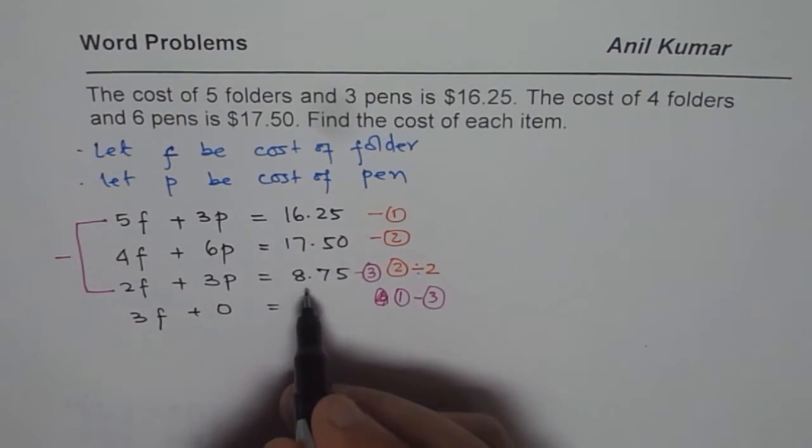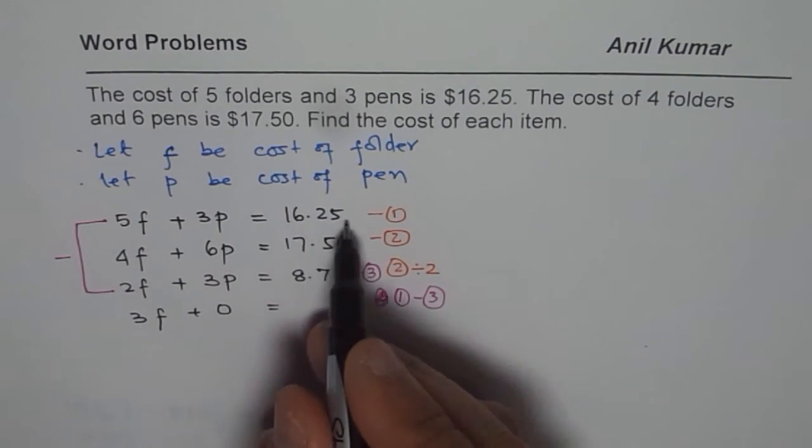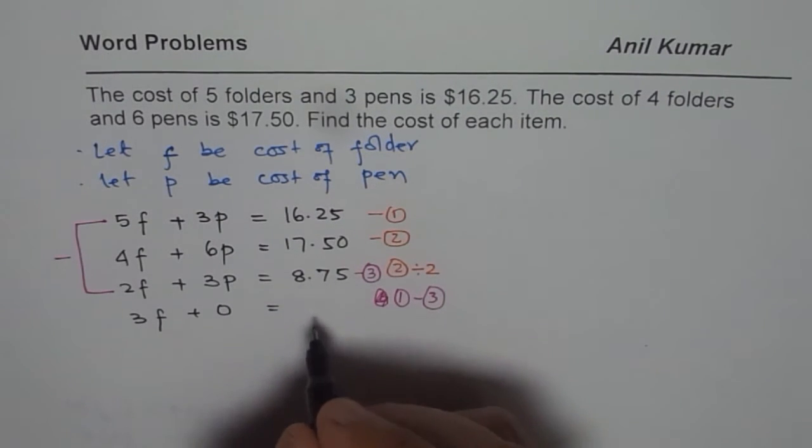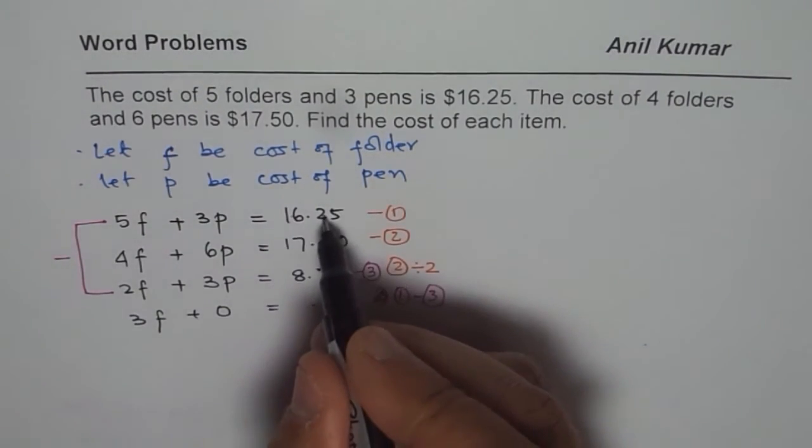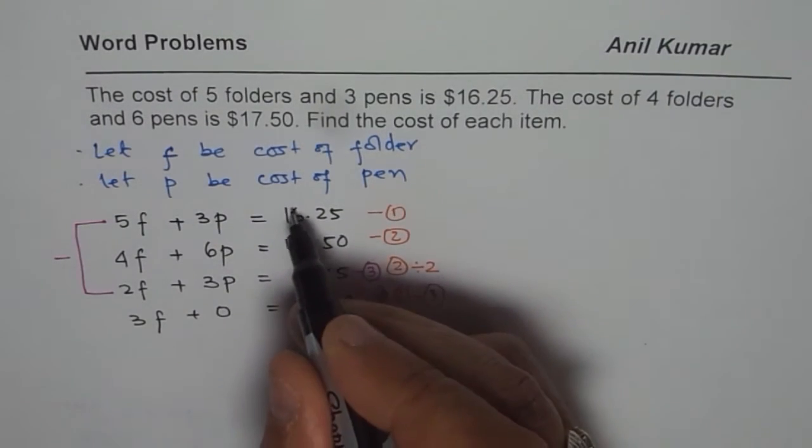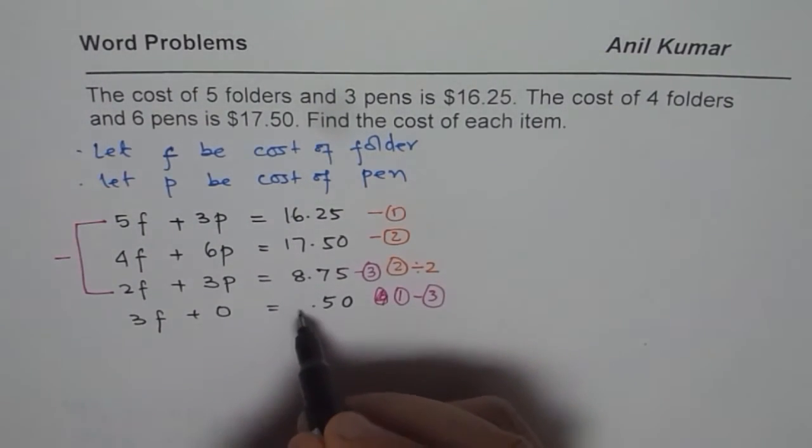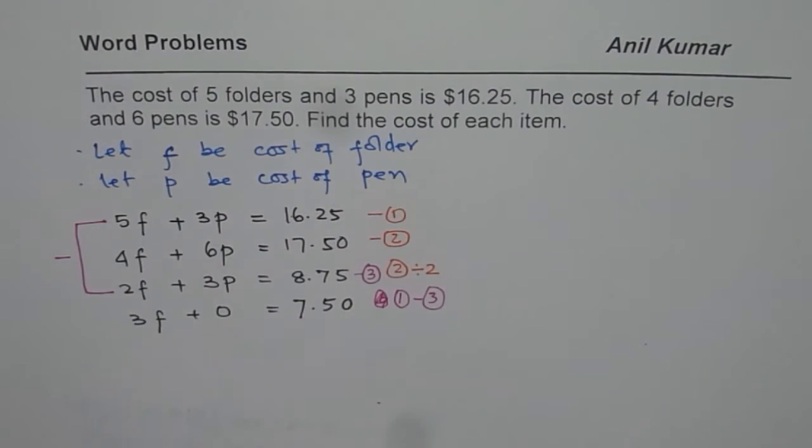And 18 take away, 1625 take away 875. So it will be less than 8. So 5 take away 5 is 0. We will borrow 1, 12, 50. 15 take away 8 will be 7. So we get 750.